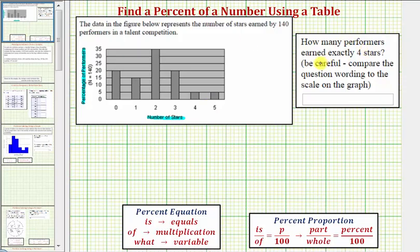Our question is: how many performers earned exactly four stars? Notice here's four on the horizontal axis, which represents the number of stars. Based upon the height of this bar, we can determine that five percent of the performers earned four stars.